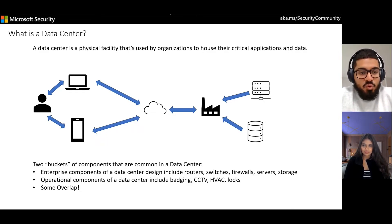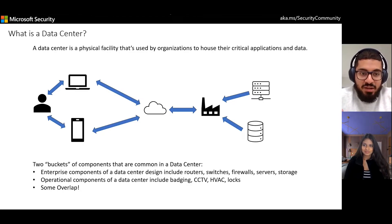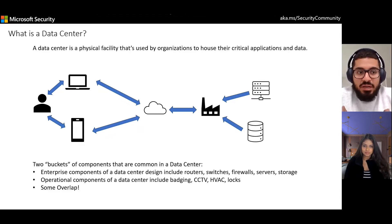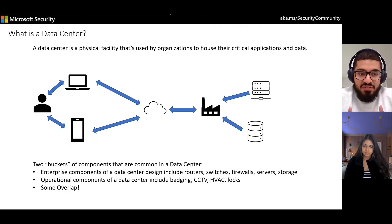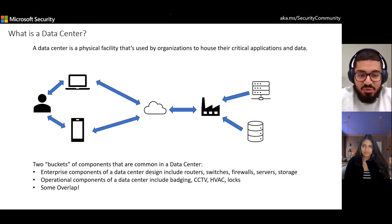Data centers have two buckets of components. The first is the enterprise IT focus, where user data is stored, applications are running, and people access data and applications from their phones or computers. The other side, and the one we're mostly focused on in our domain, is the operational components — cybersecurity systems, HVAC, cooling, CCTV, locks — that help run day-to-day operations. We're starting to see more overlap, with devices connected to the internet like industrial IoT, which makes data centers more efficient but also introduces more cybersecurity gaps and surface area exposed to threat actors.